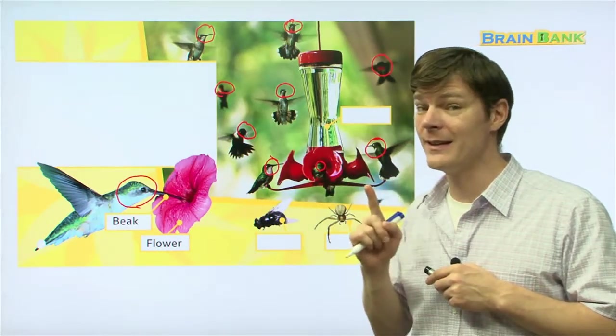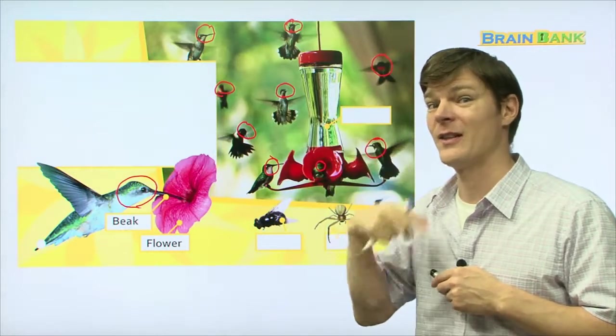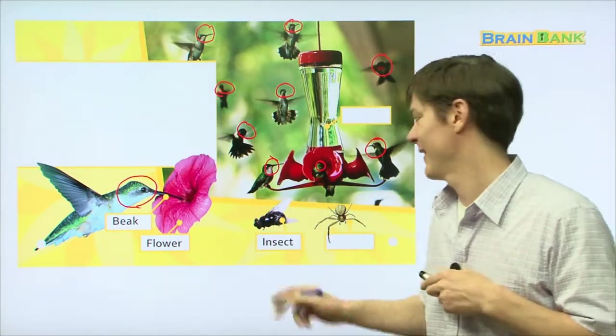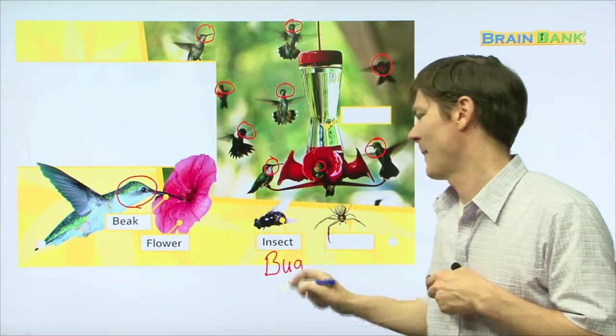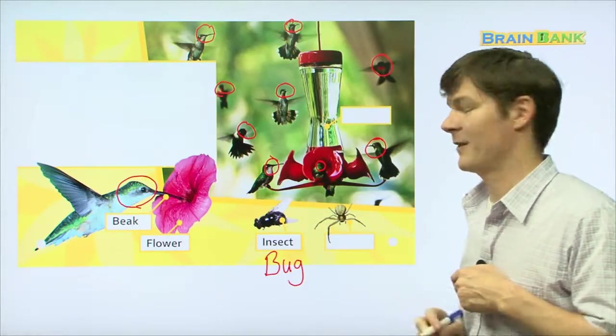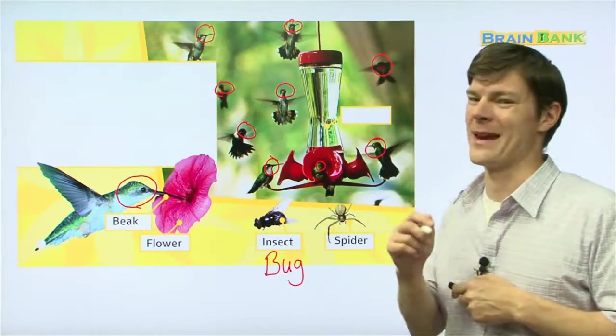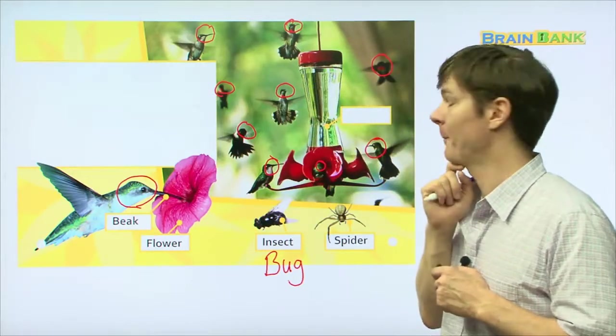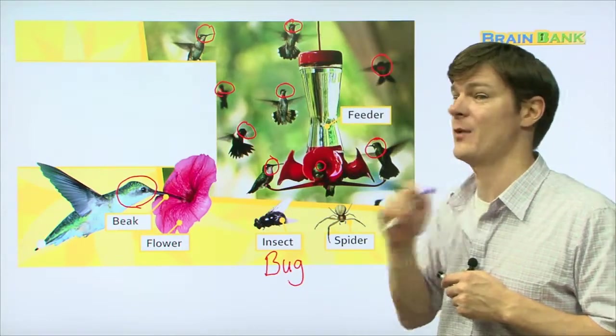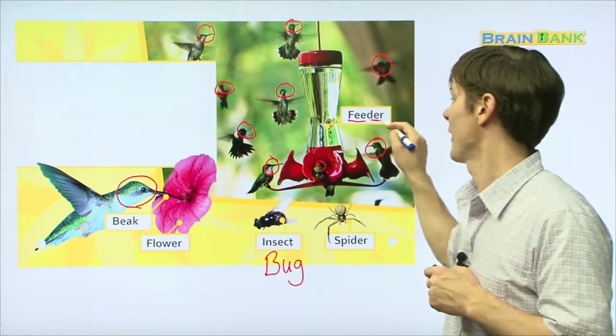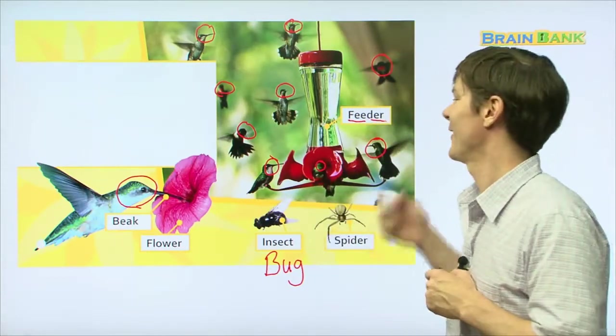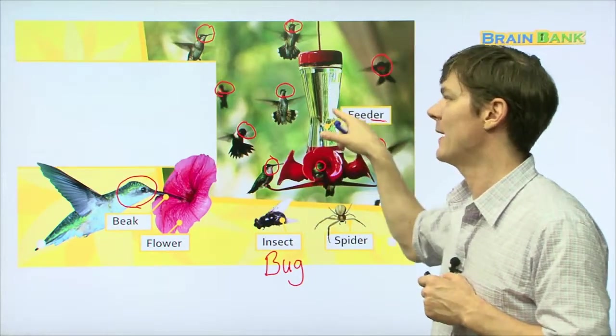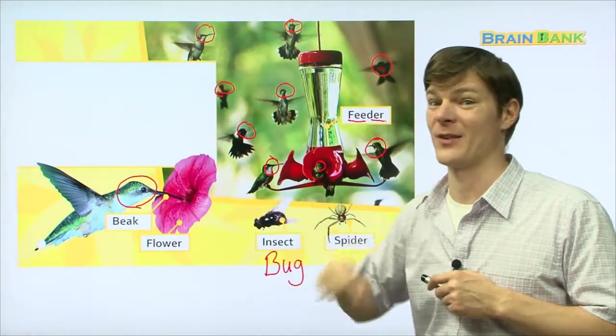Hummingbirds don't only eat flowers, or actually the nectar inside flowers. They also eat other things, such as insects. This is an insect. It's a kind of bug. A bug is an insect. Then we have this. What is this, boys and girls? A spider. That's right. Gomi. And then we have this. Now this is a new word for you. Let's look at it. Can anybody try and say that word? Let's sound it out. Feeder. So a feeder has liquid, ecce, inside of it that the birds can drink. This liquid is like the liquid that's found inside flowers. It's very similar.